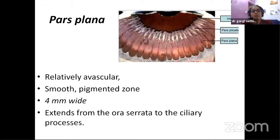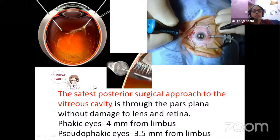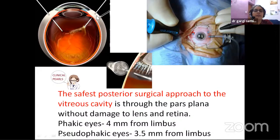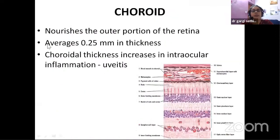Pars plana is very important in your retina clinic. It is a relatively avascular area, smooth and pigmented, around 4 millimeters wide. It is the safest posterior surgical approach to the vitreous cavity — you can see the needle piercing into the eye through the pars plana and vitrectomy being done. Ideally, around 4 millimeters from the limbus is where you get a safe pars plana area, with the least chance of damage to the lens and to the retina.